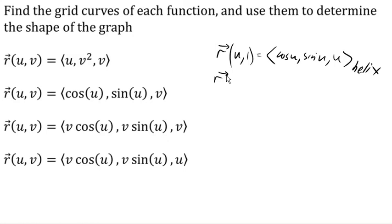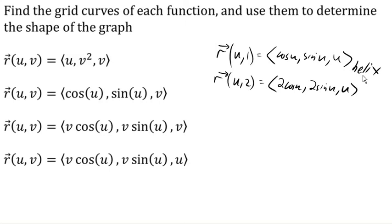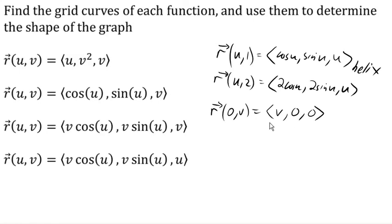If v equals 2, we get (2 cos u, 2 sin u, u) — also a helix, but with a larger radius of rotation. Now what happens if we let u equal a constant? If u equals 0, cosine is 1 and sine is 0, giving (v, 0, 0) — a line pointing purely in the x direction, at y equals 0, z equals 0.